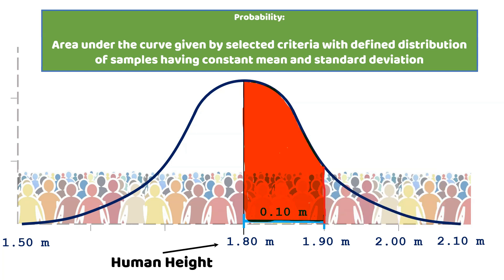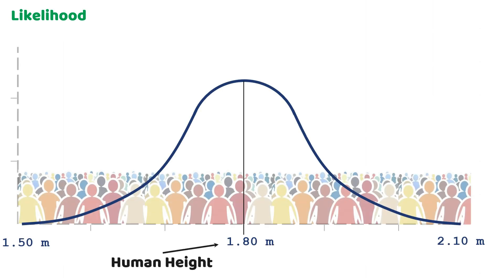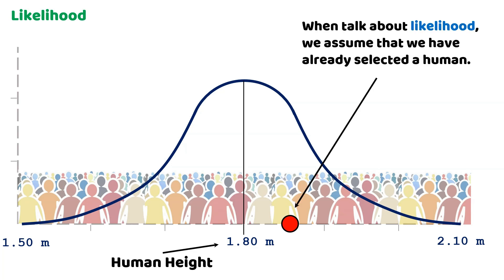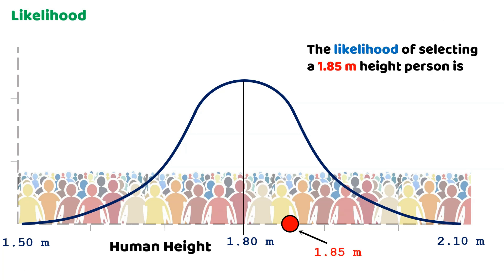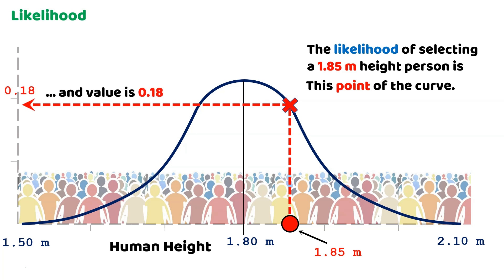We just covered the idea of how probability works. Let's talk about likelihood. We assume that we have already selected a human. So, here is our selection. This selection represents a human of 1.85 meters of height. The likelihood of selecting a 1.85 meter height person is this point under the curve, and its value is 0.18.